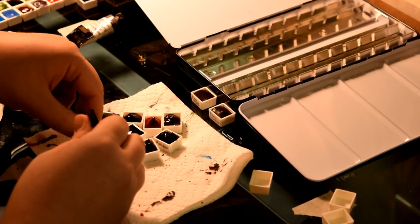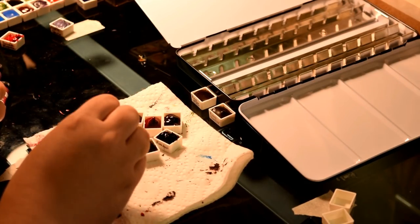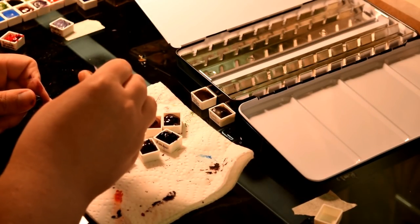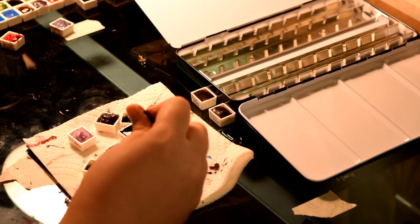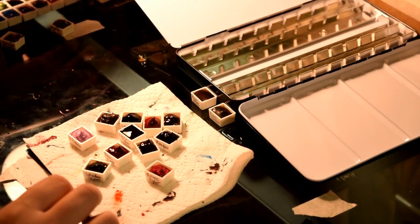I'll do a more detailed video later about how I choose what colors to put in my palette but in general I think it's really important to check the pigment numbers on the side of your paints and make sure that the paints you're putting in your palette are not a mixture of a bunch of different pigments.